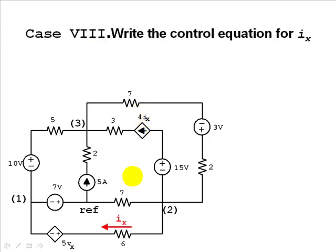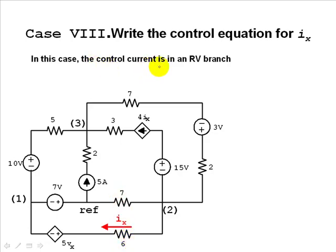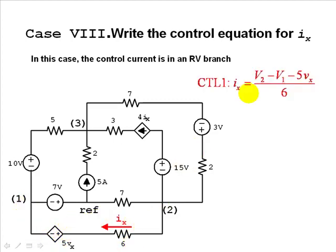Case 8: the controlling current is now the current through this 6-ohm resistor at the bottom. That current is just the current in an RV branch — this is an RV branch regardless of whether the voltage source is a dependent source. That current equals V2 (origin) minus V1 (destination) minus 5Vx, divided by 6 ohms. That is the control equation. We have written the control current IX in terms of two node voltages and one other control variable Vx.